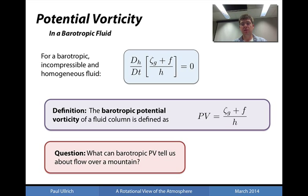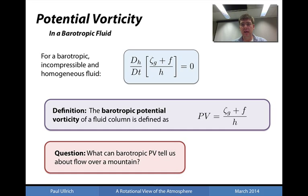Recall the concept of potential vorticity that we discussed last time for a barotropic fluid. For a barotropic, incompressible, and homogeneous fluid, we have that this quantity — potential vorticity — is conserved following a fluid column. Potential vorticity in this case being zeta_g, which is the vorticity obtained from the geostrophic wind, plus f, which is the planetary vorticity, all divided by the height of the fluid column h.